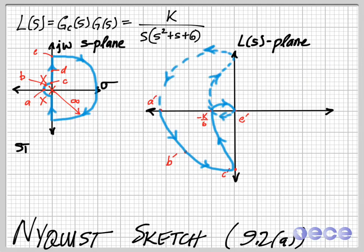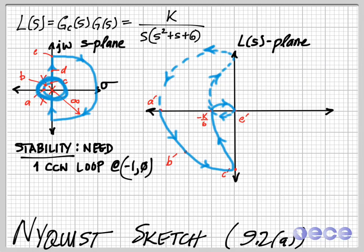So because we start with one pole inside of our contour over here on the left, so here we've included this pole at the origin inside of our contour. So we need to have one counterclockwise loop around the point minus 1, 0. And so if the point minus 1 is inside this loop, then we satisfy the stability criterion.